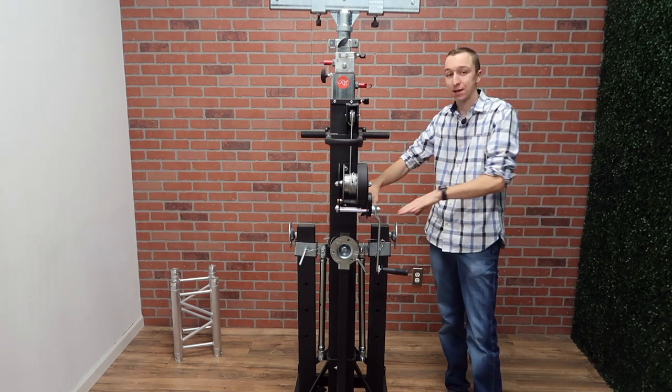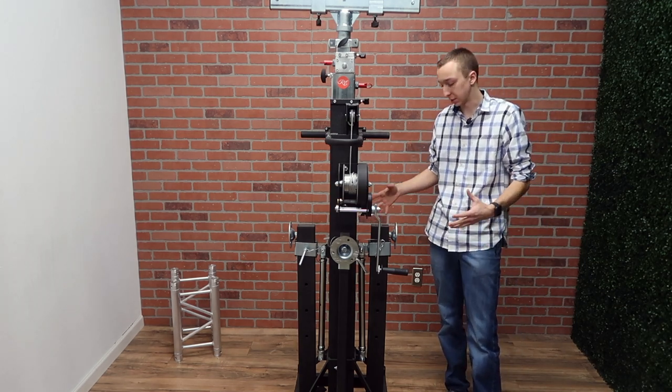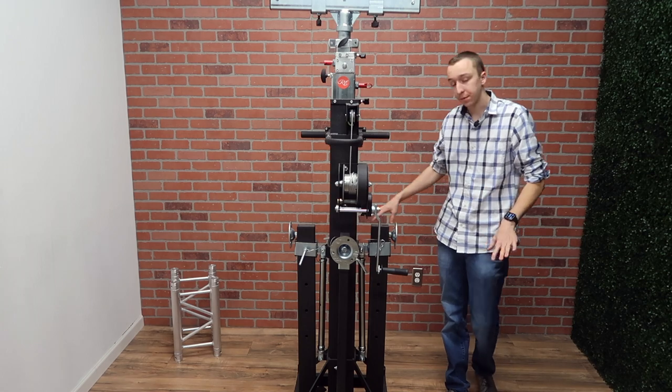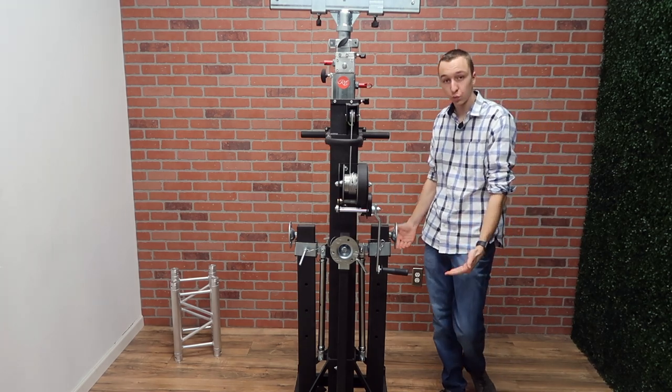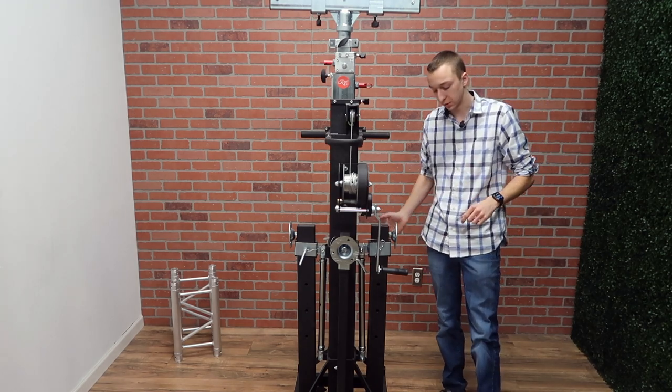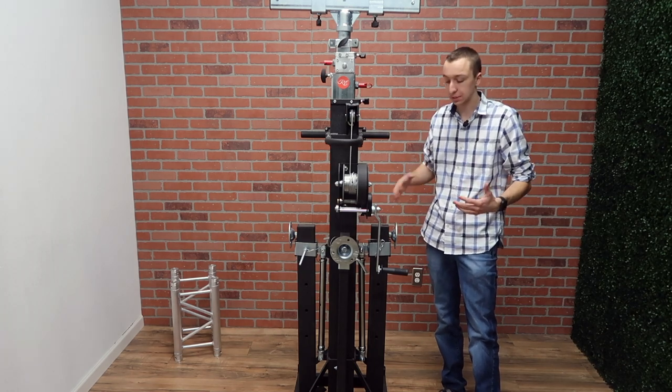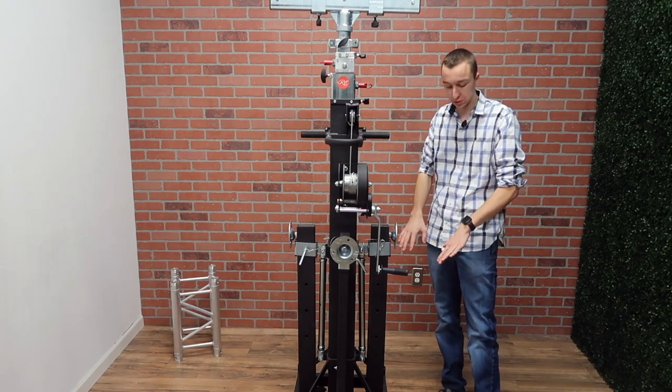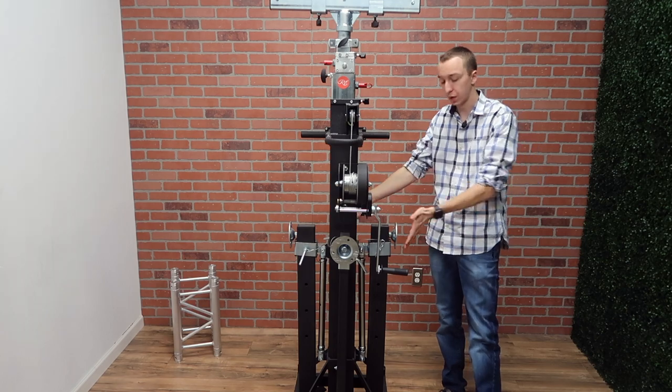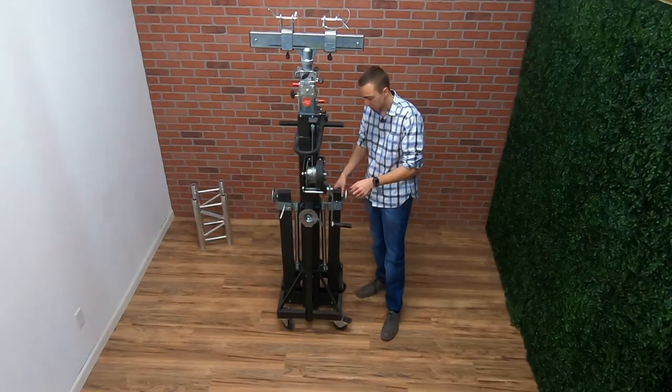Once you have that off to the side, we can begin extending the outriggers and dropping them into place. It's important that once these are dropped down, they're also tightened enough that the bottom wheels come off the ground just a little bit so that you can swivel them around. What that does is takes the weight off the wheels, the plastic wheels on the bottom, and it puts all the weight on these metal outriggers.